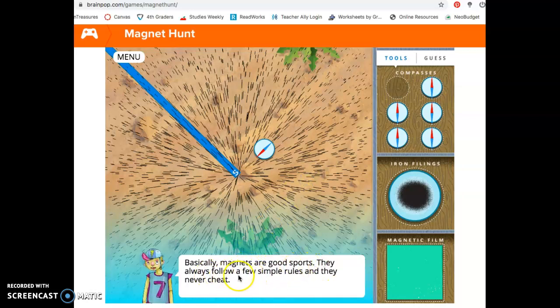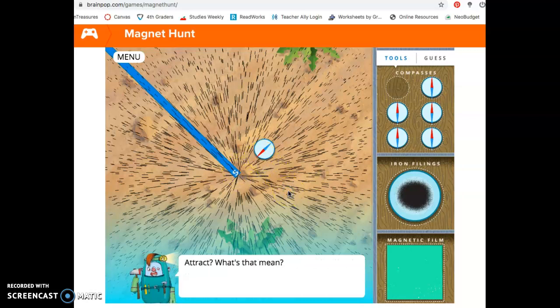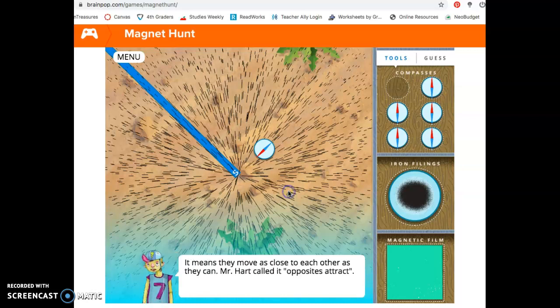How does the compass decide which way to point? Basically, magnets are good sports. They always follow a few simple rules and they never cheat. Rule 1. North attracts South and South attracts North. Attract? What's that mean? It means they move as close to each other as they can. Mr. Hart called it opposites attract. So students, if you see here the red, that represents North and this represents South. So they're attracted to each other. You can see that the South Pole, the compass, is pointing away from that as they repel each other. Rule 2. North repels North and South repels South. Repels, what's that? North and North really don't like each other and push each other away. Same thing with South and South.